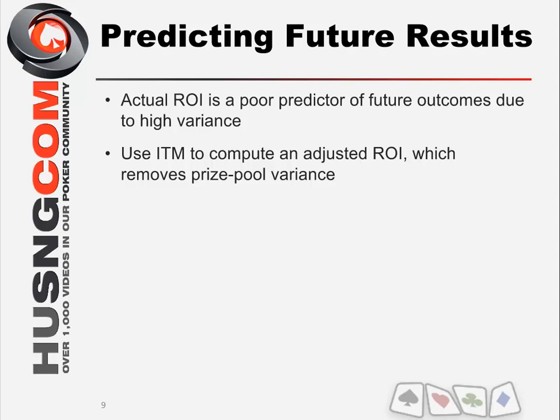When you use In The Money to compute your adjusted ROI — I'll show you how to do that on the next slide — it removes the prize pool variance. When you look at how often you're cashing in games, you get an idea of how often you'd expect to cash in future games, giving you an idea of your effective ROI if there were no prize pool variance. That's how you remove that element from your results.